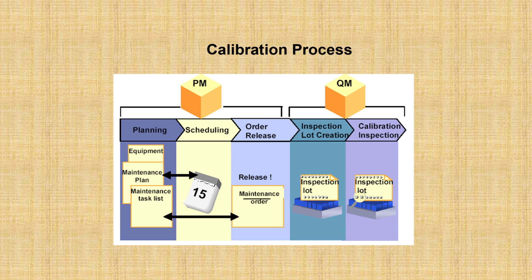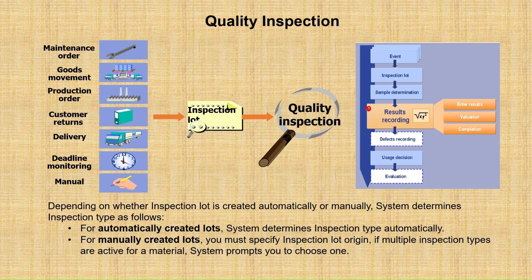Plant maintenance integration covers testing of equipment under calibration inspection. You check whether equipment such as a thermometer or vernier caliper is working properly. Recurring inspection is also performed if the material is in stock for a long duration.